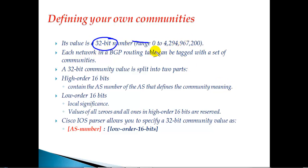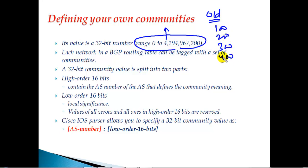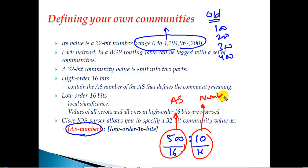To define your own communities, it's a 32-bit number, meaning you can use a range up to 2 to the power of 32 - a very large range. There are two ways of defining your own communities. The first is the old method where you can use any number within this range - like 100, 200, 300, 400. The new method, supported by most modern IOS, uses the format AA:NN, for example 500:10. The first 16 bits define your autonomous system number where the routes originate, and the second 16 bits can be any number you define.